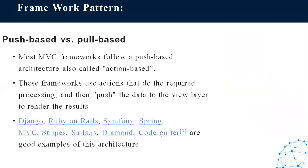We have two types of MVC patterns: push-based and pull-based. Most MVC Model-View-Controller frameworks follow a push-based approach. In this architecture, actions do the required processing and then push the data to the view layer to render. Examples of push-based frameworks include Django, Ruby on Rails, Symfony, Spring MVC, and Stripes.